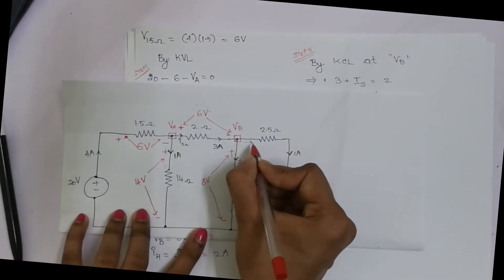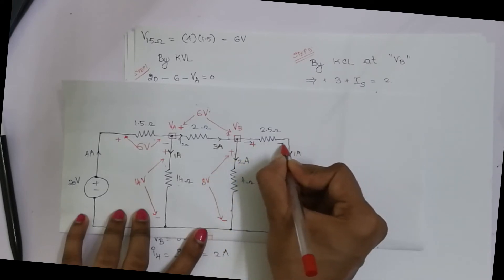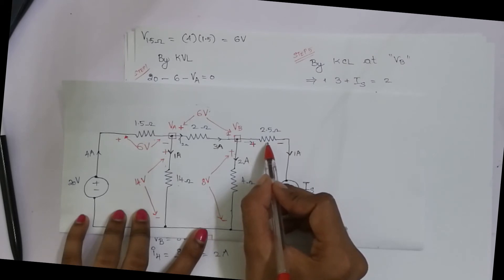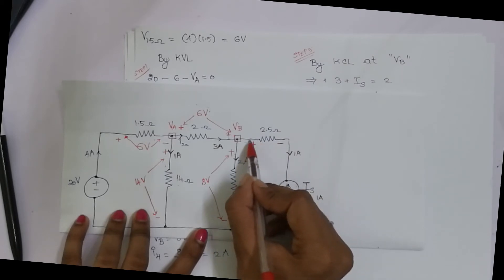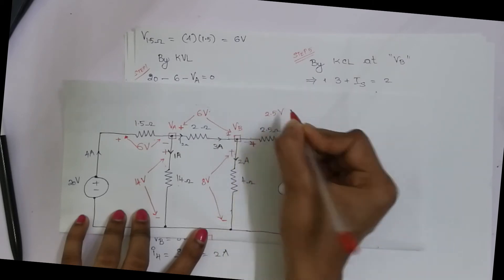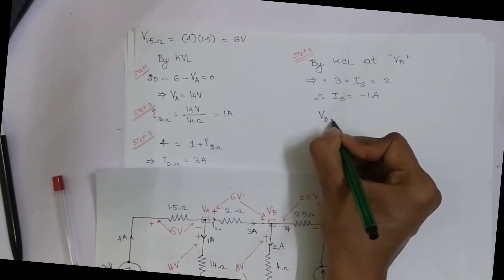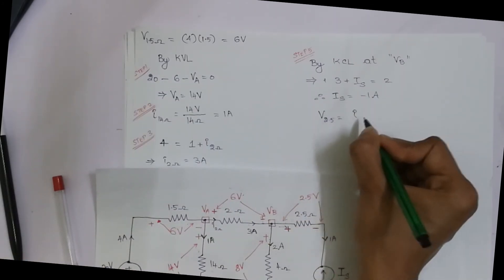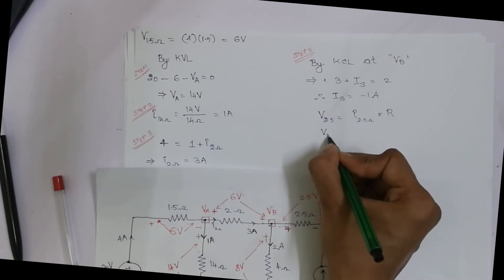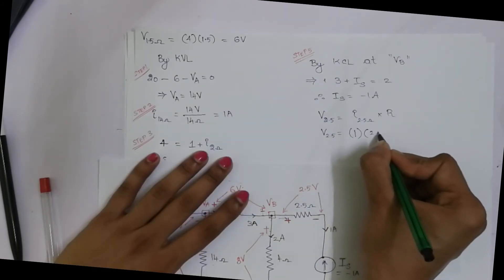The current is absorbed in this direction, so plus is here and minus is here. The voltage across the 2.5-ohm resistor is 1 ampere × 2.5 ohms = 2.5 volts.